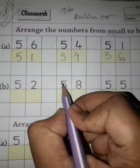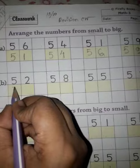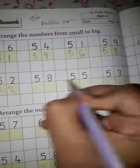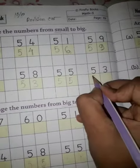Next, 52, 58, 55, 53. So smallest number is 52, then 53, then 55, then 58.